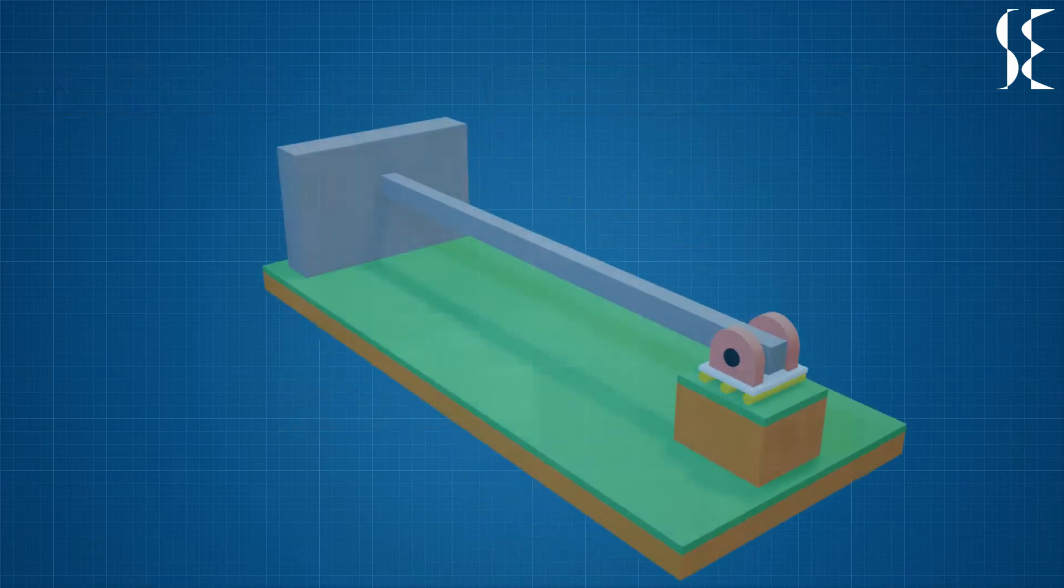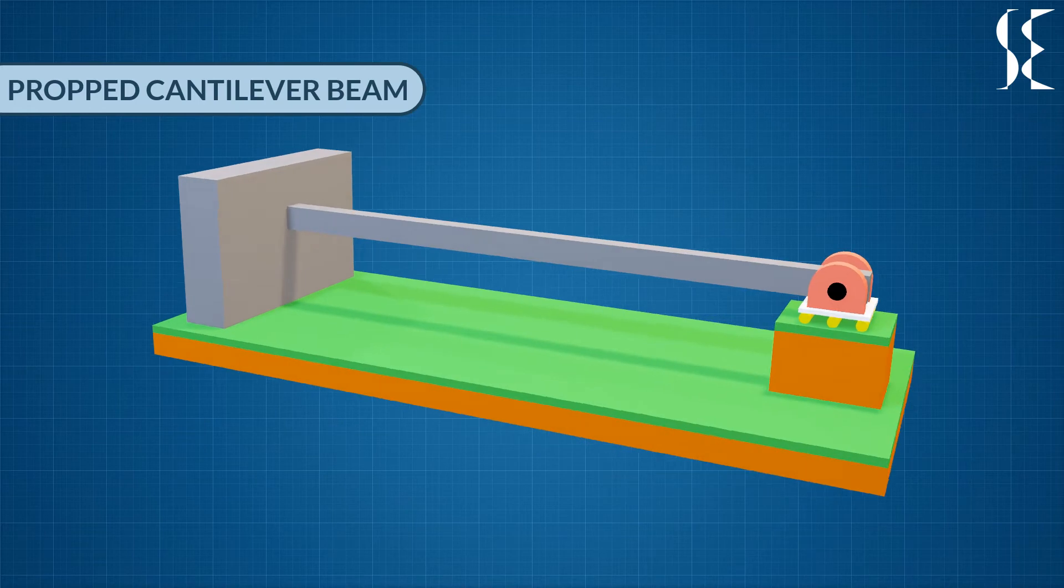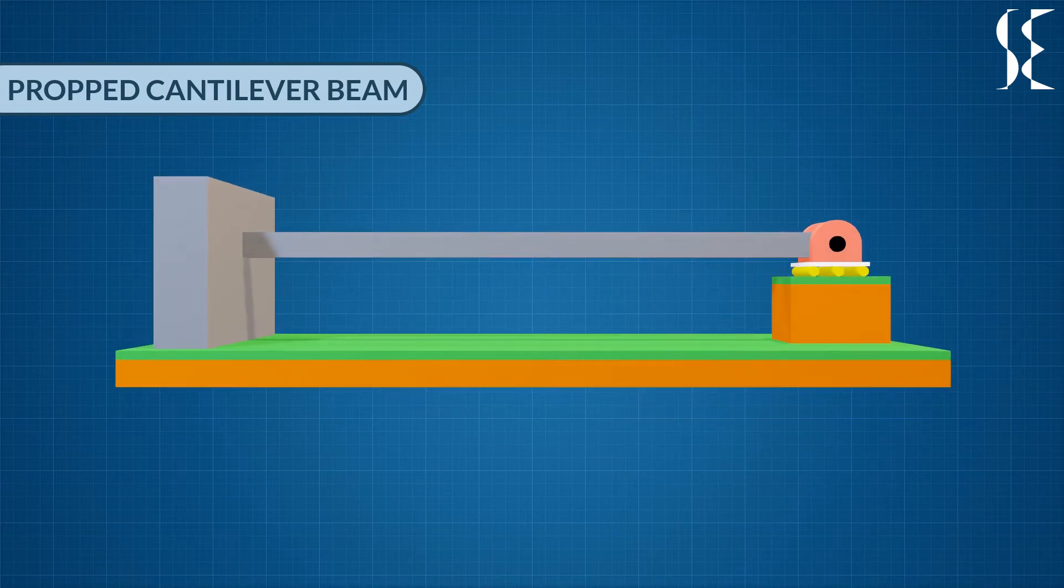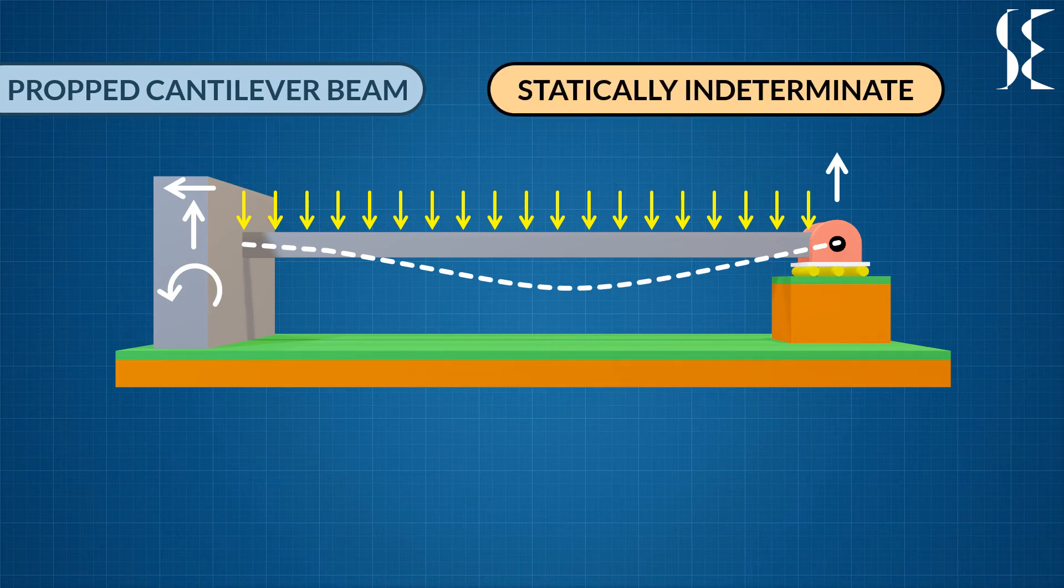Next, we will see a propped cantilever beam which is nothing but a cantilever beam with a roller support at the other end. The deflected shape due to loading on the propped cantilever would look something like this. As the total number of unknown reactions are 4, 3 from fixed support and 1 from roller, it will be termed as statically indeterminate beam.